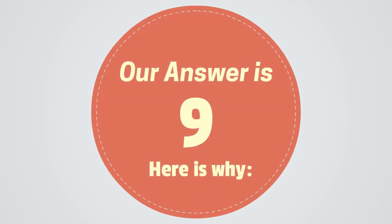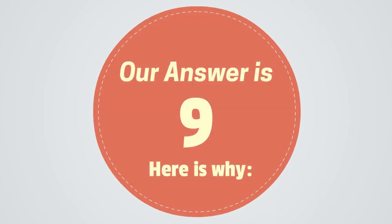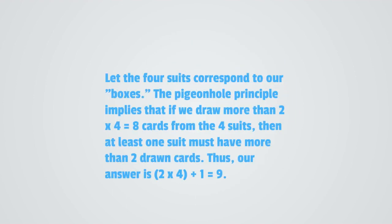Our answer is 9. Here is why. Let the four suits correspond to our boxes. The pigeonhole principle implies that if we draw more than 2 times 4 or 8 cards from the four suits, then at least one suit must have more than two drawn cards. Thus, our answer is 2 times 4 plus 1, which is equal to 9.